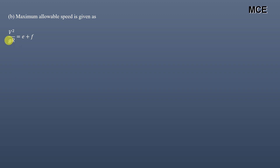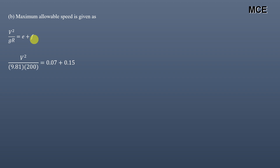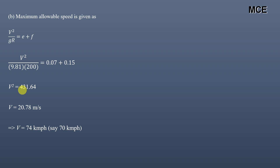The maximum allowable speed is found from V²/(G×R) = e + f, where e = 0.07 and f is restricted to 0.15. So V² divided by (9.81 × 200) equals 0.07 plus 0.15. This gives V² = 431.64, so V = 20.78 m/s, which converts to 74 km per hour.